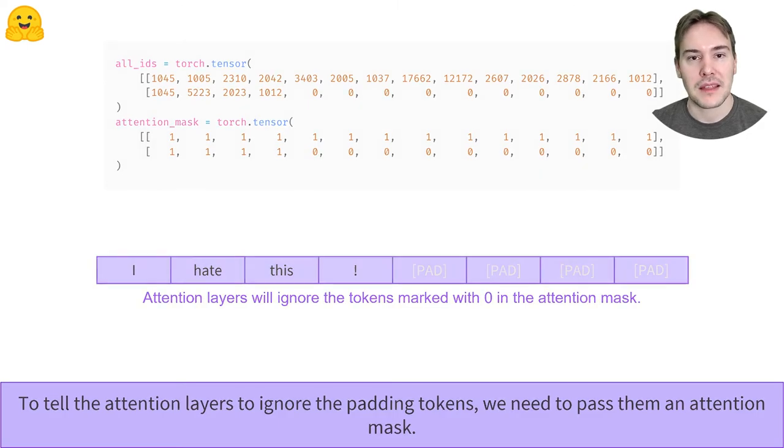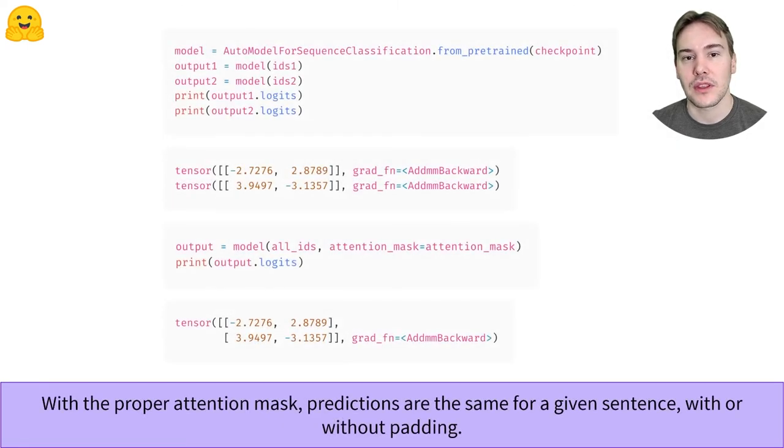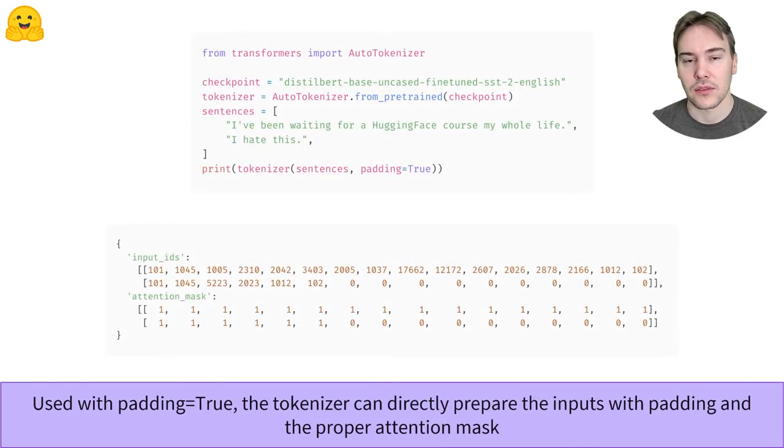Now, passing this attention mask along with the input IDs will give us the same results as when we send the two sentences individually to the model. This is all done behind the scenes by the tokenizer when you apply it to several sentences with the flag padding equals true. It will apply the padding with the proper value to the smaller sentences and create the appropriate attention mask.